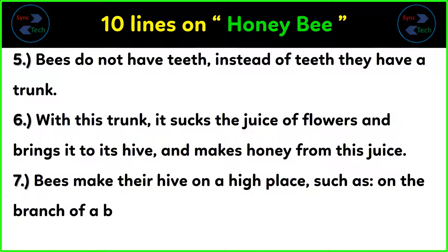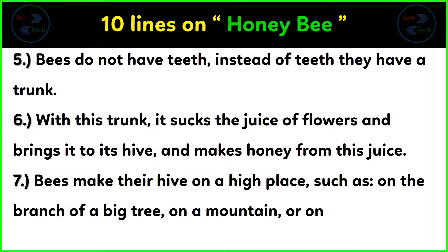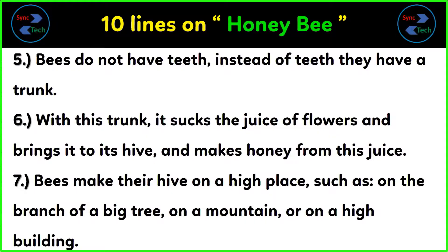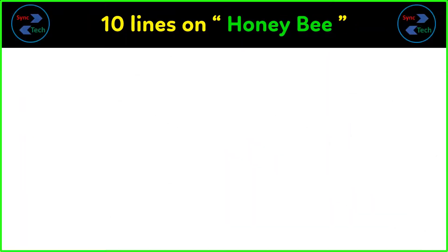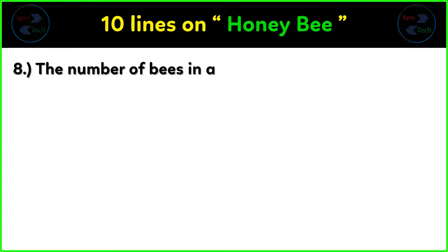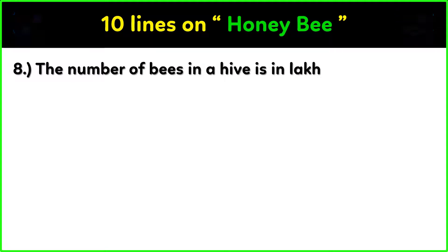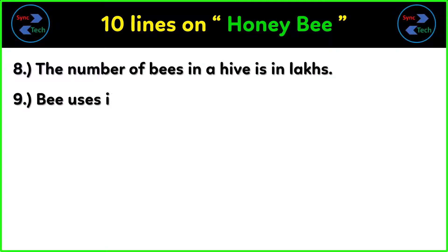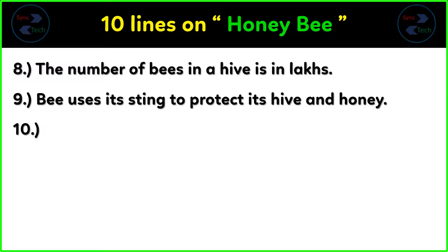Bees make their hive on a high place, such as on the branch of a big tree, on a mountain, or on a high building. The number of bees in a hive is in lakhs. Bees use their sting to protect their hive and honey.